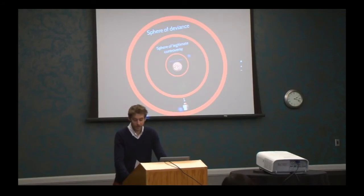Yet, there are two counter-intuitive things to consider about these spheres. First, they are permeable. Issues can move between them over time. Consider, for example, attitudes towards women's suffrage between the 19th century and today. And second, studies show that journalists disproportionately choose to cover deviance even as they condemn it.